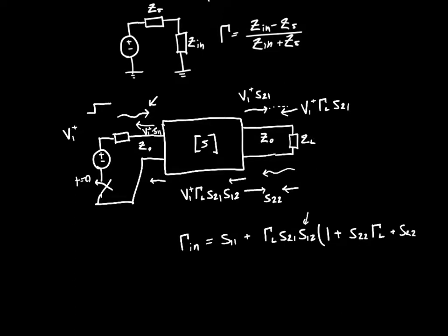And indeed this continues to happen forever. So S22, gamma L, each of those is squared and so on and so forth. But we can just write this whole thing as a sum from n equals zero to infinity of S22 times gamma L to the n. And that's just a simple geometric series whose sum we know is one over one minus S22 gamma L.